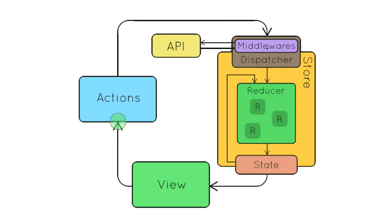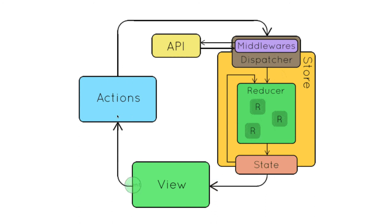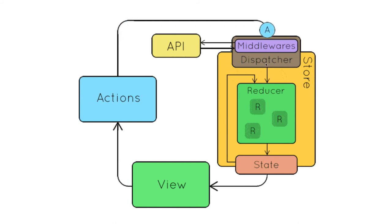There can be other types of middlewares too — like a logger, which logs the current state and the state that will result after the action is applied. You can create a logger middleware that logs both the before and after state. Redux Thunk checks every action: does it have a promise in the action payload? If yes, it waits for that promise to be resolved — by making the API call and waiting for it to complete, succeed, or be rejected — then sends the action data to the reducers.